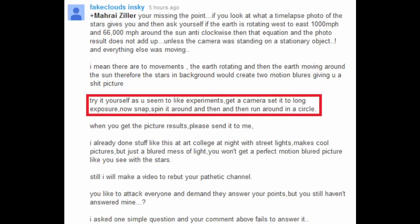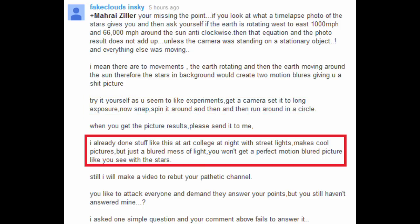He then goes on to say, try it yourself as you seem to like experiments. Get a camera, set it to long exposure, now snap, spin it around, and then run around in a circle. And asserts that they've already done stuff like this at art college at night with street lights. Makes cool pictures, but just a blurred mess of light. You won't get a perfect motion blurred picture like you see with the stars.